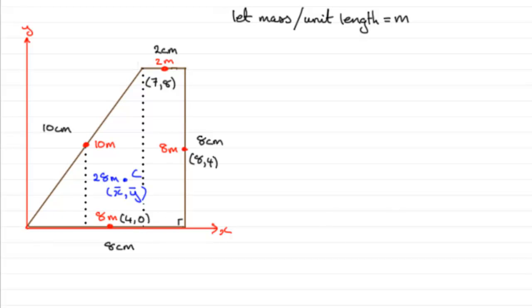So in other words, the coordinates for this mass at 10M will be just 3 units across here because, remember, this distance is 6. So it will be 3 units across and 4 units up. So we'll mark that coordinate in at 3, 4.